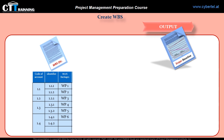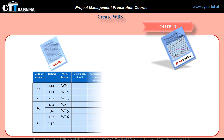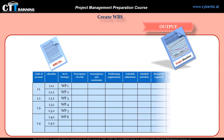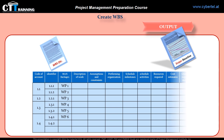How does the WBS Dictionary look? It could include the following information: Code of Account Identifier, Description of Work, Assumptions and Constraints, Performing Organization, Schedule Milestones, Associated Schedule Activities, Resources Required, Cost Estimates, Quality Requirements, Acceptance Criteria, Technical References, and Agreement Information. In fact, you can add more columns as more information is needed.